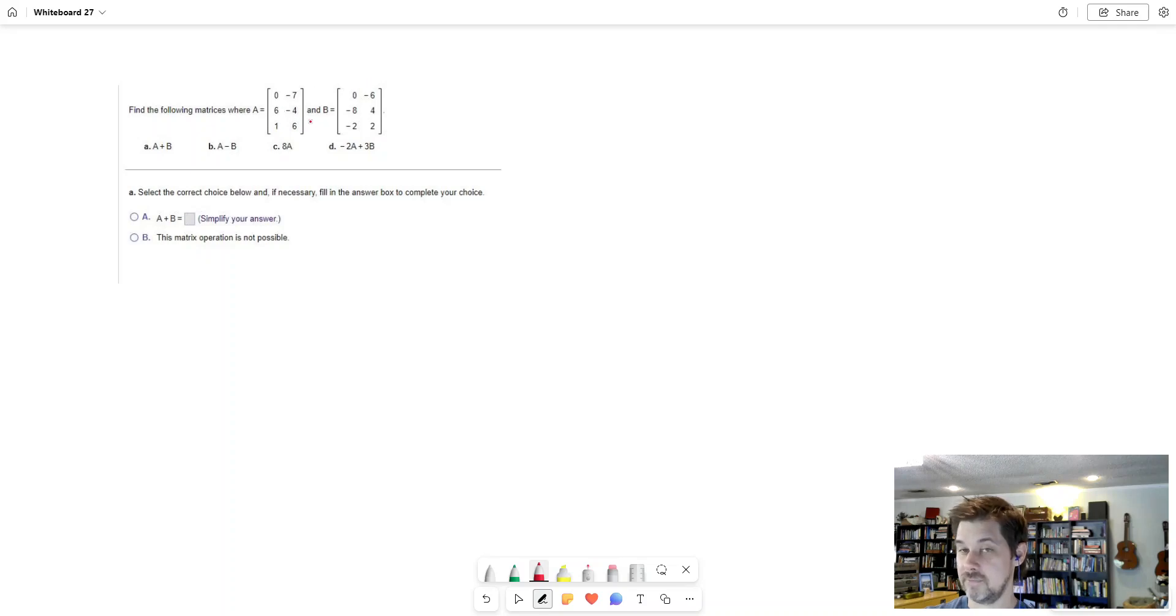Part A says what is matrix A plus matrix B, and here's what matrix A and B are. A matrix is an array of numbers. It has columns and rows. For example, matrix A has two columns - columns go up and down - and three rows. Rows go left and right. Matrix B I notice is the same size. It also has two columns and three rows.